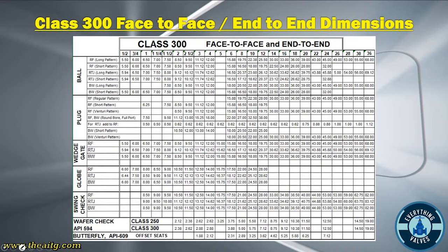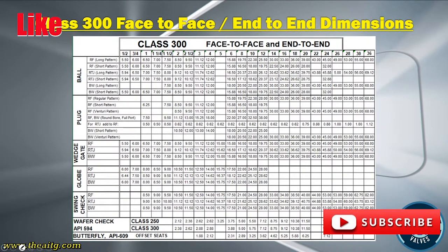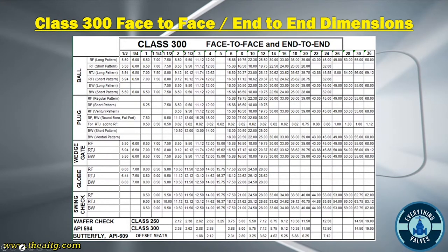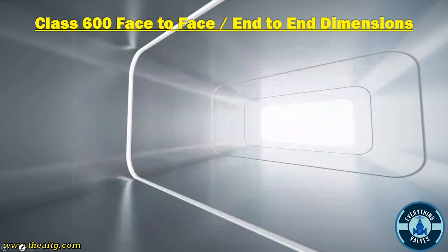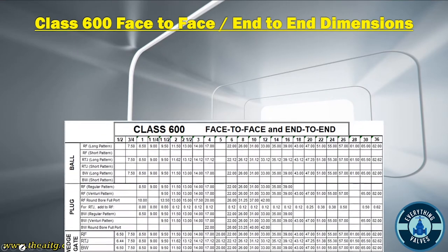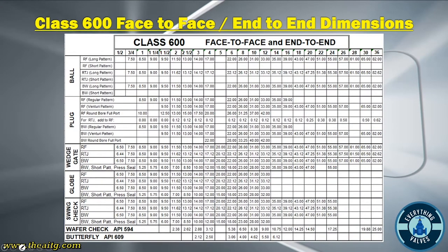Class 300 face-to-face and end-to-end dimensions — here you will have all of the end-to-end dimensions for Class 300 valves. Class 600 face-to-face and end-to-end dimensions — here you will have the Class 600 face-to-face and end-to-end dimensions.